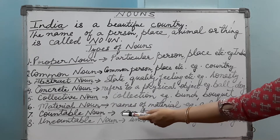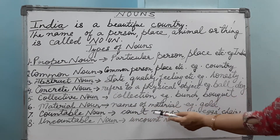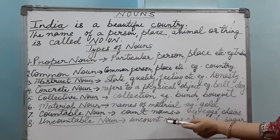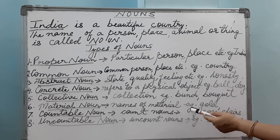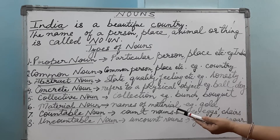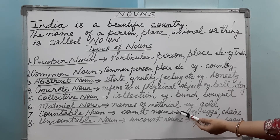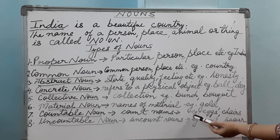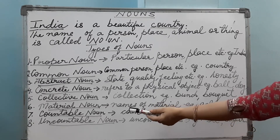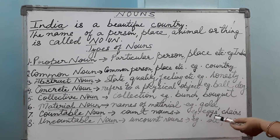Then comes the countable noun. Again, as the name suggests, it is something which you can count. They are also known as count nouns. If I give you water and a few eggs — can you count water? No, you cannot count water. But can you count eggs? Yes, you can count eggs. So countable nouns are nouns which you can count. Examples: eggs, chairs, etc.